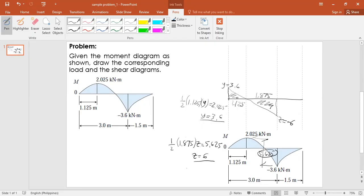One half of 1.875 times z equals 5.625. So we can solve for z. Using your calculator, the value of z is 5.625 times 2 divided by 1.875. Z is equal to 6. But since it's below the horizontal line, it's negative 6.